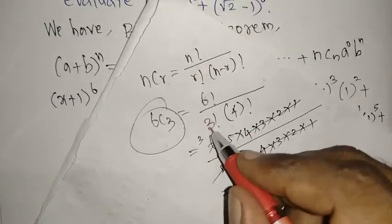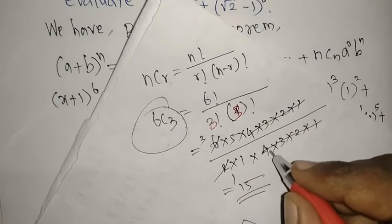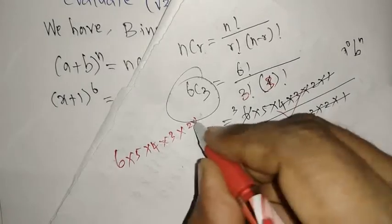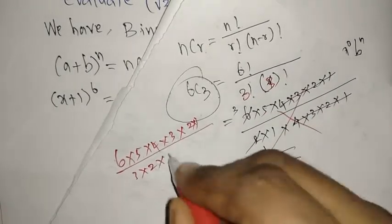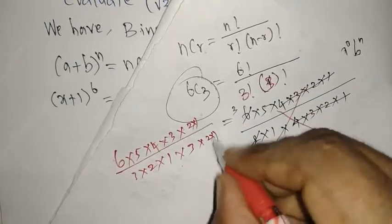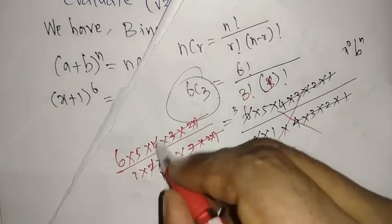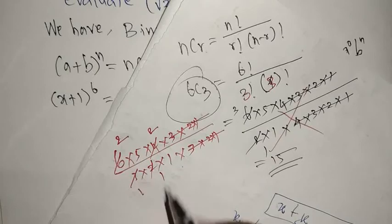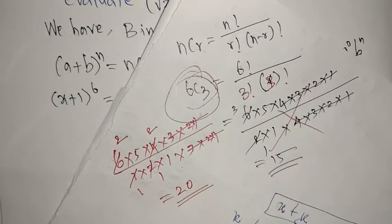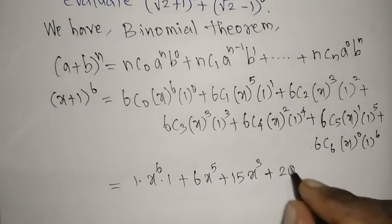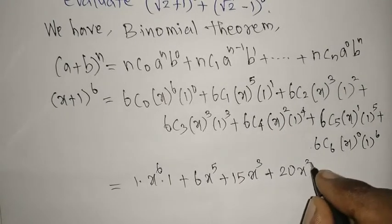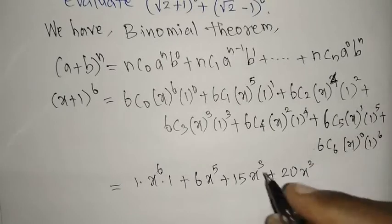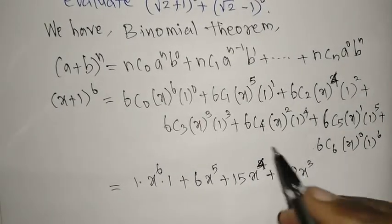For 6C3: 6! / (3! · 3!) = (6 × 5 × 4 × 3 × 2 × 1) / (3 × 2 × 1 × 3 × 2 × 1). Cancelling gives 6 × 5 × 4 / 6 = 20. So 6C3 = 20, and this term is 20x³.